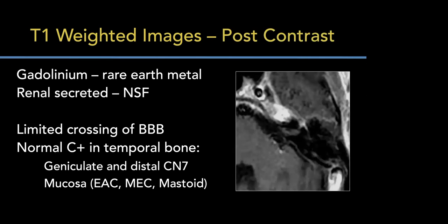A brief note on gadolinium: it's a rare earth metal, renally secreted. We've been easing up on renal requirements since newer formulations essentially have no reported cases of nephrogenic systemic fibrosis. In the brain, gadolinium doesn't readily cross the blood-brain barrier, so you don't see much intracranial enhancement outside vessels. In the temporal bone, the geniculate and post-geniculate facial nerve has a rich venous plexus, so normal enhancement there is expected. Enhancement within the labyrinthine segment or IAC should be minimal. Mucosal enhancement in the EAC, middle ear, and mastoid is also normal.